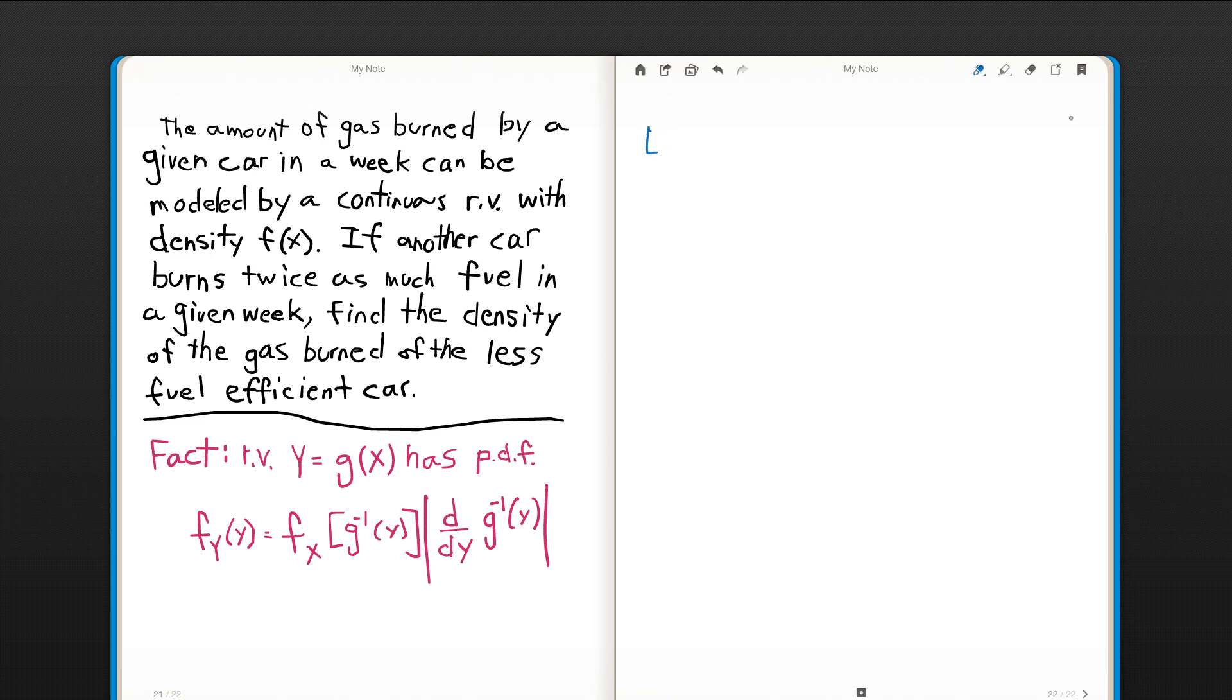So let's lay out some foundations here. Let's let x equal fuel used by the first car, by the fuel efficient car. That's per week, right? And what the problem is saying is that we have another car that burns twice as much fuel. So another random variable, you can think of it driving the exact same route that the other car drove during that week. And it just happens to burn exactly twice the amount. So that's the random variable, it's actually defined as twice the amount.